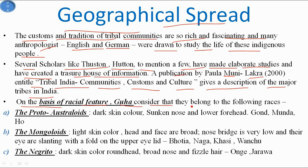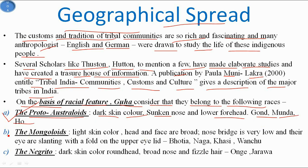On the basis of racial features, Guha considered that they belong to the following races. The first race is the Proto-Australoid, who have dark skin color, sunken nose, and lower forehead. Examples of tribes with these features are Gond, Munda, and Ho.